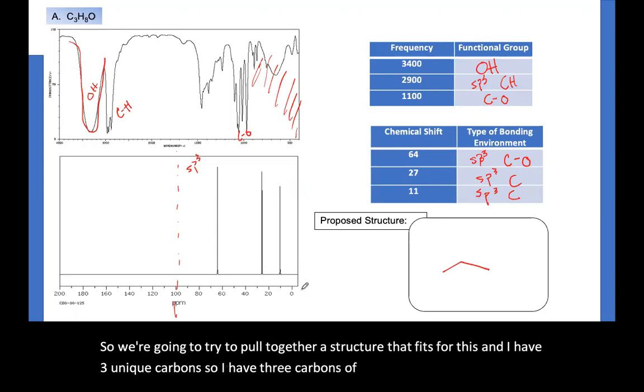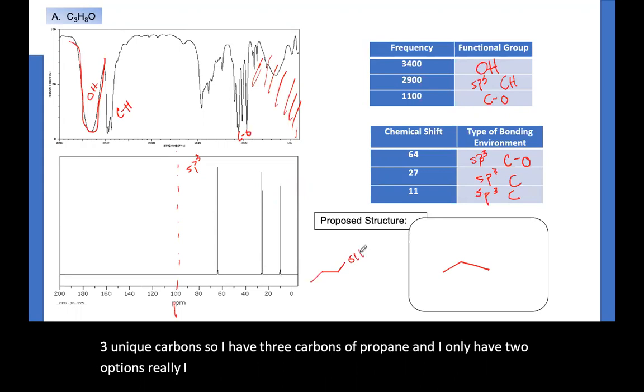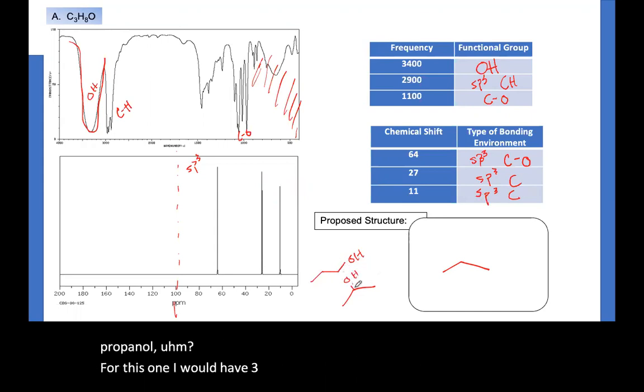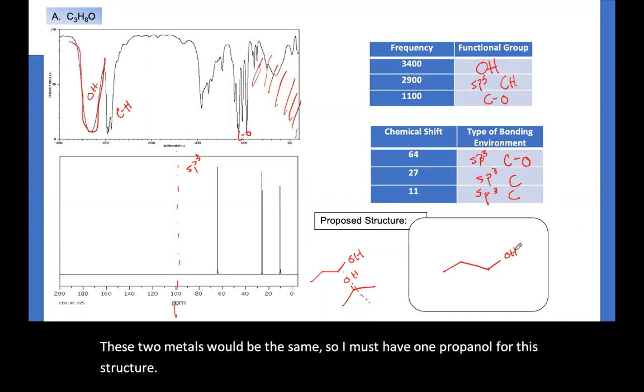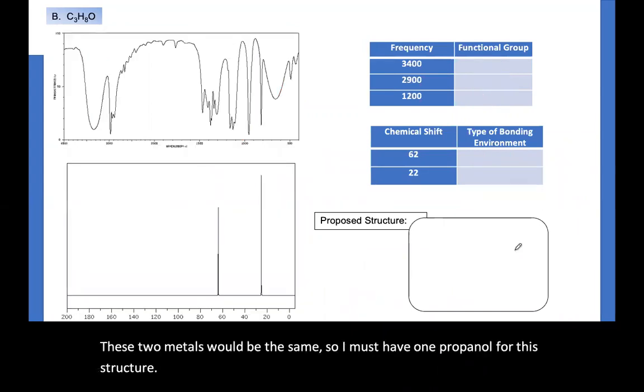So now we're going to try to pull together a structure that fits for this. And I have three unique carbons. So I have three carbons of propane. And I only have two options. For propane, I only have two possible isomers, propanol. And for this one, I would have three unique carbons. But for this one, these two methyls would be the same. So I must have one propanol for this structure.